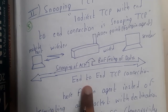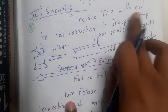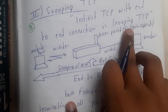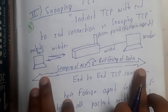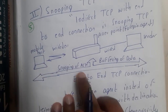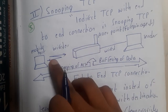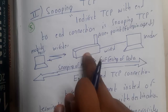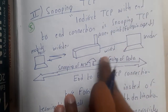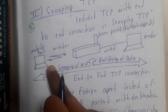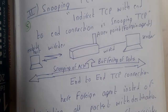Indirect TCP with an end-to-end connection is called Snooping TCP. Here we have an end-to-end connection, hence this is called Snooping TCP. The access point will not send any acknowledgement or data — he is just a listener. He will observe everything: whatever data is being transferred, whatever data is being received. He is just a snooper.